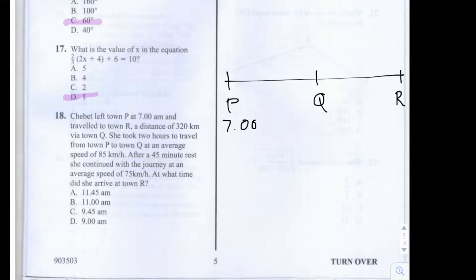It says the distance from town P to town R is 320km, so we can mark that on here. 320km.